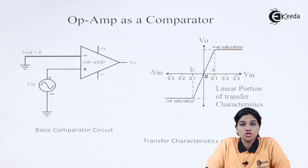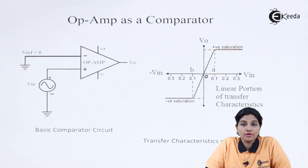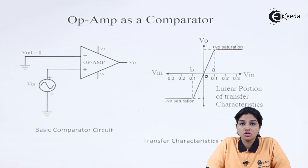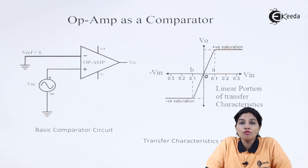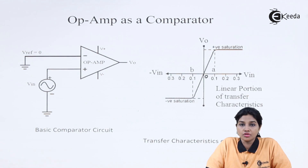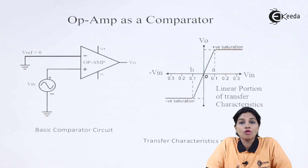The comparator has many applications: it can be used as a window detector, a zero crossing detector, a Schmitt trigger, and also for converting analog signals to digital signals, since it provides output in the form of high and low voltage levels. Depending on which terminal V-in is applied to, there are two types of comparators: inverting comparator and non-inverting comparator. If V-in is applied to the inverting terminal it is an inverting comparator; if applied to the non-inverting terminal it is a non-inverting comparator. In either case the Op Amp provides either positive or negative saturation at the output.